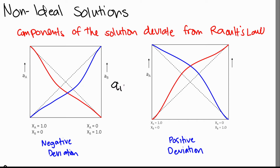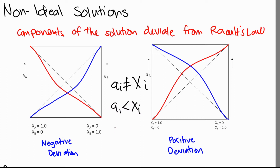For a non-ideal solution, the activity will not be equal to the mole fraction. For negative deviation, the addition of B into A or A into B lowers the activity of either component. The dashed lines give the activity for the ideal case, and when A and B are mixed, the activity is lower than Xᵢ. So for negative deviation, aᵢ is less than Xᵢ.